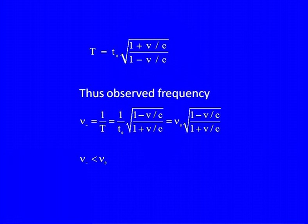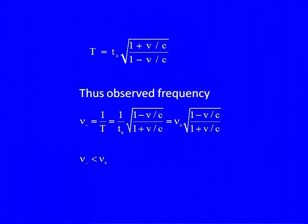How do you find the frequency here? You just take the inverse of the time interval. We call this frequency nu-minus = 1/T. You invert the expression and relate T-0 with the emitted frequency nu-0. You immediately find nu-minus, and you can see that nu-minus is less than nu-0. So in every case so far, we have seen a change in frequency depending on the velocity of the observer moving away from the light source.